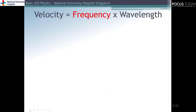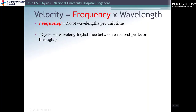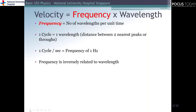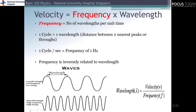We can now describe the relationship of the wave components further in terms of frequency, velocity, and wavelength. Frequency is described as the number of wavelengths per unit time. One cycle is equivalent to one wavelength — the distance between two nearest peaks or troughs. Frequency is described in units of hertz, where one hertz equals one cycle per second. Frequency is inversely related to wavelength: waves with a longer wavelength have a lower frequency, and waves with shorter wavelengths have a higher frequency.